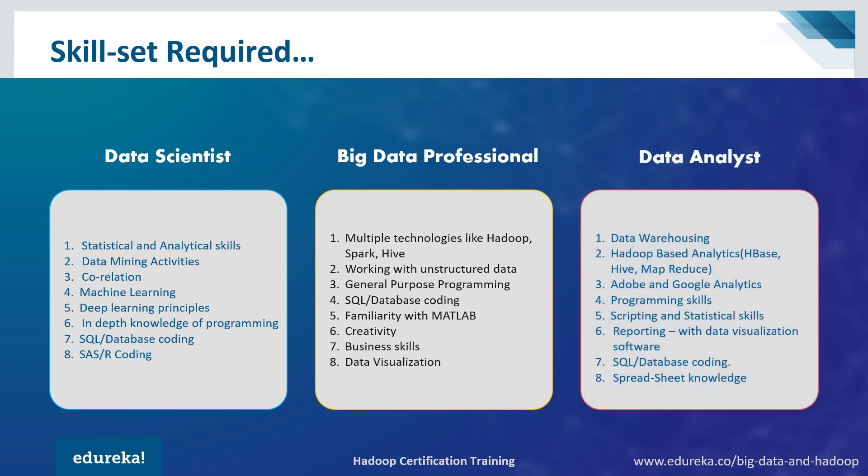Let's take a look at the skills required to become a data analyst. You need a thorough understanding of data warehousing concepts, familiarity with computer software and tools including scripting, query language, spreadsheet knowledge, and basics of statistical language. You should also have an idea about programming and big data tools. Note that some skills overlap — for example, statistical and analytical skills appear in both data scientist and data analyst roles, but are of higher priority for data scientists. Similarly, programming is essential for data scientists, while big data professionals and data analysts should have working knowledge of it.